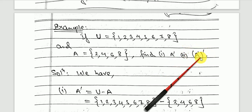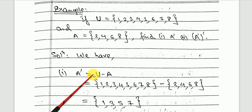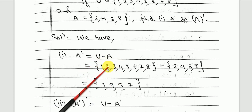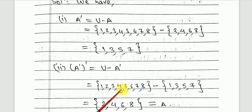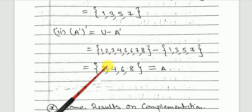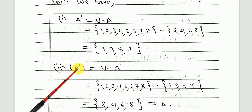For example, if the universal set U = {1, 2, 3, 4, 5, 6, 7, 8} and A = {2, 4, 6, 8}, then A complement = U minus A = {1, 3, 5, 7}. The complement of A complement gives back {2, 4, 6, 8}, which equals A. So taking the complement twice returns the original set.